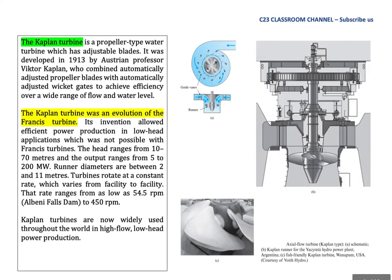This is the Kaplan Turbine. The Kaplan Turbine is a propeller-type water turbine which has adjustable blades. It was developed in 1913 by Austrian professor Victor Kaplan, who combined automatically adjusted propeller blades with automatically adjusted wicket gates to achieve efficiency over a wide range of flow and water level. The Kaplan Turbine was an evolution of the Francis Turbine.